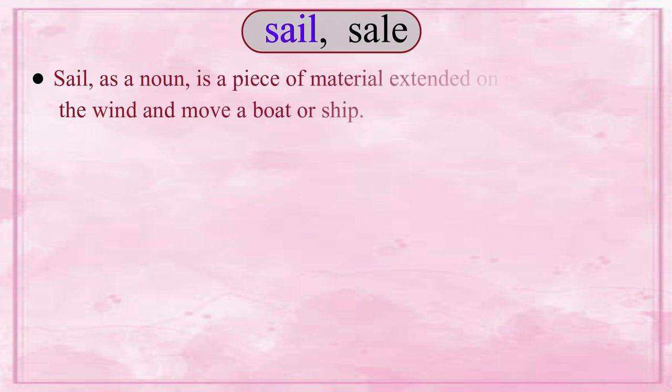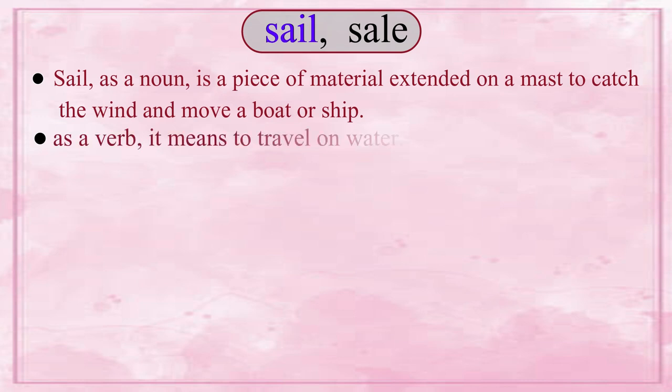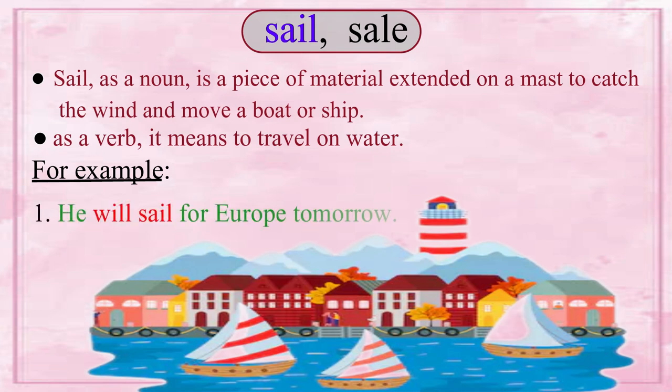S-A-I-L 'sail' and S-A-L-E 'sale' — these words have the same pronunciation but their meanings are not the same. Sail as a noun is a piece of material extended on a mast to catch the wind and move a boat or ship. Mast is a tall upright pole. Sail as a verb means to travel on water. For example: 'He will sail for Europe tomorrow.'